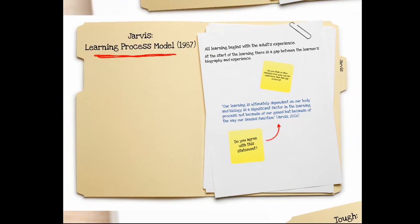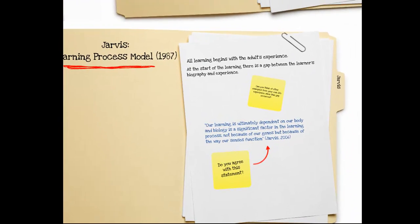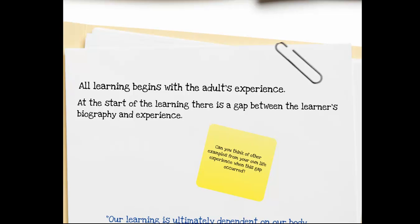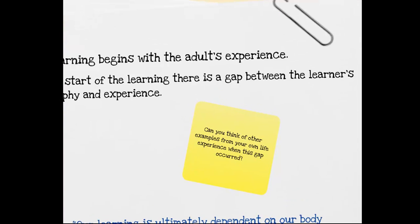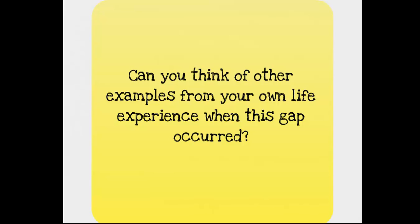Jarvis developed a learning process model and stated that all learning begins with the adult's experience. At the start of the learning, there is a gap between the learner's biography and experience. For example, if something happens that is new to us or that we're not ready to handle, such as becoming a parent, getting a driver's license, leaving home, going to post-secondary education, or other life events. Can you think of some other examples from your own life experience when this gap occurred?